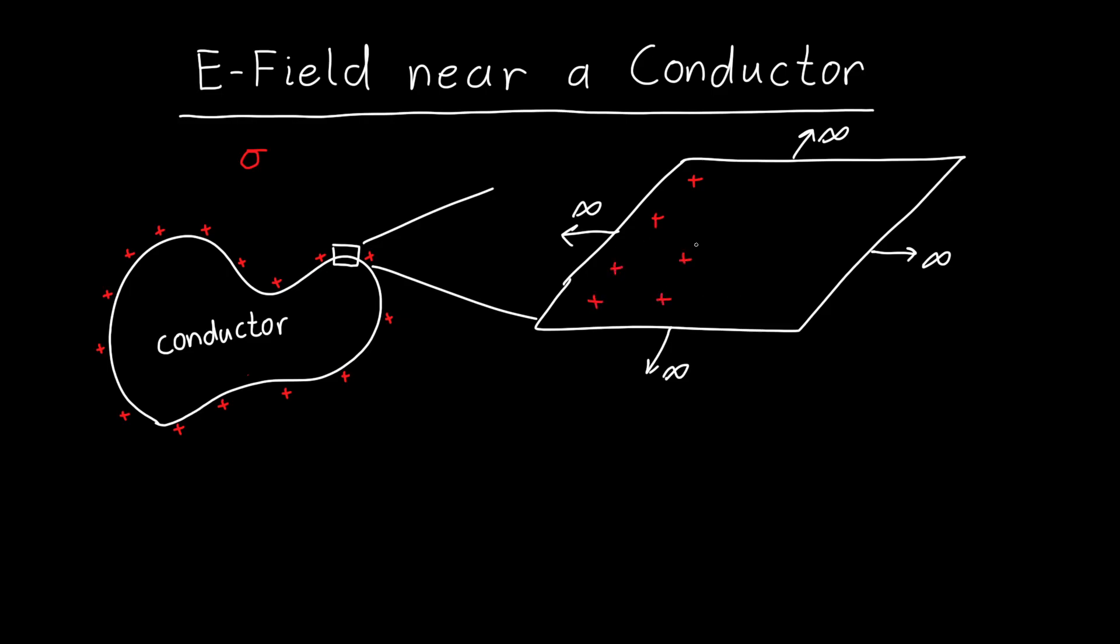And I'm going to call that surface charge sigma and we're going to assume that this is a positive surface charge. Let's just finish drawing out that. Except that now instead of just being a surface we also have underneath this surface is a conductor.